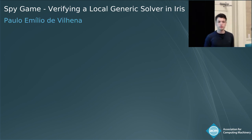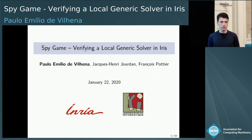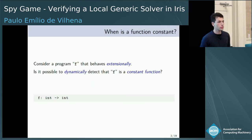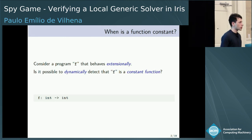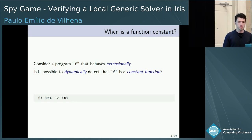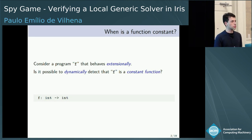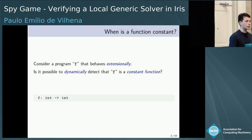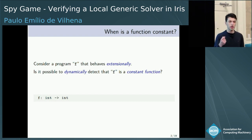This is joint work with Jacques-Henri Jourdan and François Poutier. I will start this talk with a puzzle. Suppose that we have a program f from integer to integer, and suppose that it behaves extensionally — it means that when applied to the same inputs, it returns the same outputs. The question is: is it possible to dynamically check that the program f is a constant function that always returns the same output?